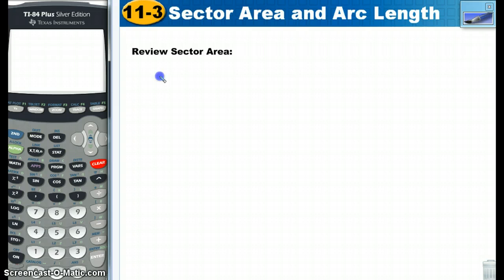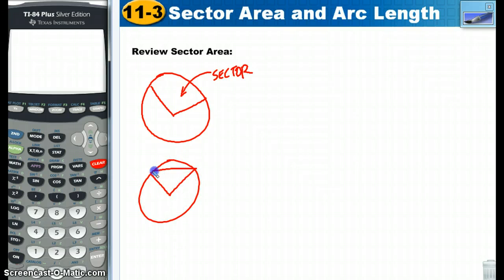So, sector area. Let's say we have a circle. And here's a piece of pizza, which we want to find the area of, and that's what we call a sector. And you'll remember later in the lesson yesterday, we found the area of this part right here, which was called a segment.